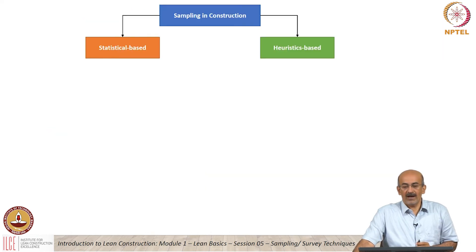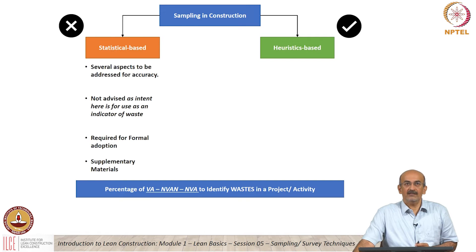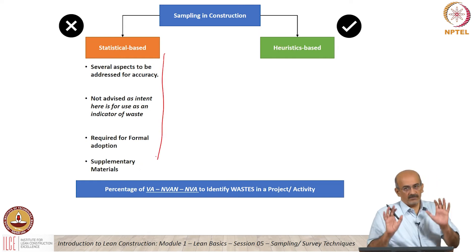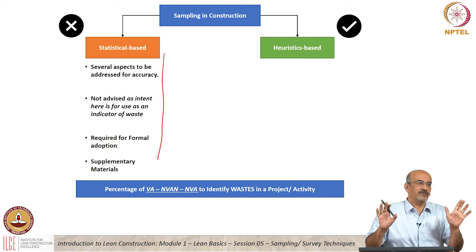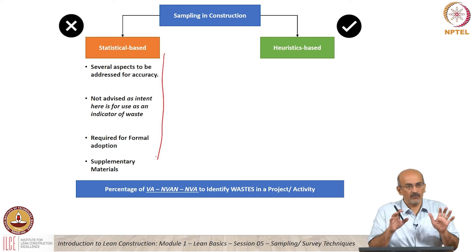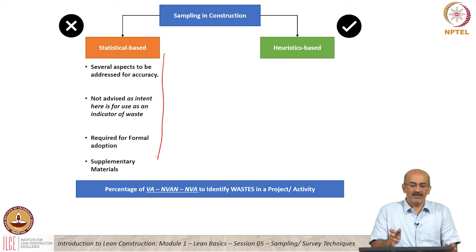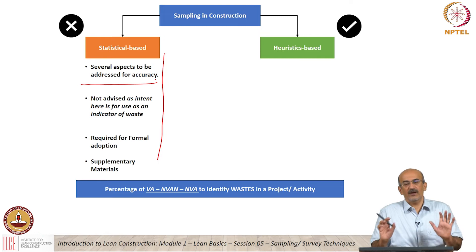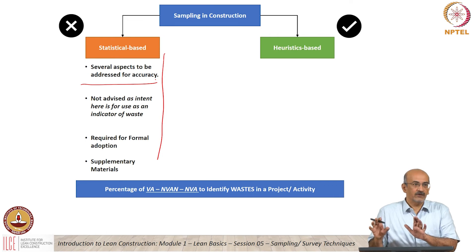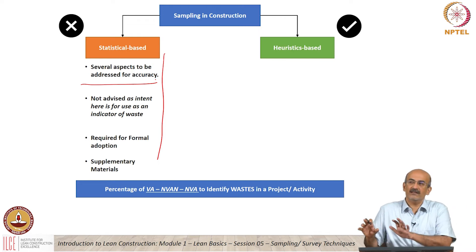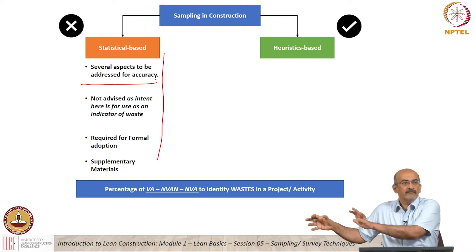If you take sampling, there is what we call statistical-based sampling — the formal way statisticians do it. If you are doing a really good experiment, this is the way you are supposed to do it. However, if I want to do proper statistical-based sampling on a construction site, the variables are so high. It will take time to design, and by the time I do, the uncertainties in construction might have changed my parameters.